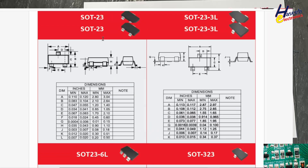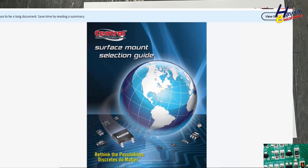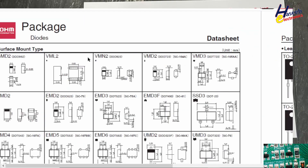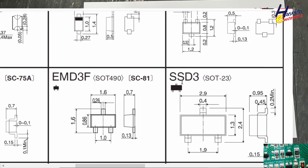Checking the MCC chart: SOT-23 with very detailed measurements in both inches and millimeters. Body length ranges from 2.8 mm to 3.4 mm; body width from 1.2 mm to 1.4 mm. Checking Central Semiconductor: SOT-23 with length 3.05 mm, width 2.49 mm, and maximum height 1.09 mm — the same package we are discussing. In RO, the name for this package is SSD-3.